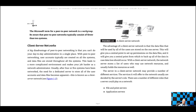In client-server networks, you can't do your day-to-day administration from a single place like peer-to-peer. The client logs in and there are files on the server to access. A lot of times servers are broken down into departments — you might have engineering, manufacturing, HR — and you'd need permissions to access the different parts of the server.